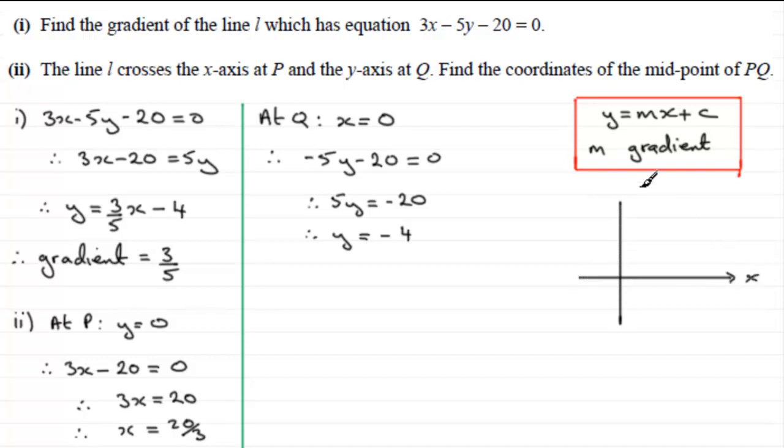So we've got our x-axis, we've got our y-axis, and we've got the point P. Its y-coordinate is 0 and the x-coordinate is 20/3, so we'll just say that P is here. P has coordinates 20/3 and comma 0. Whereas at Q, that's when x is 0, it intersects the y-axis at negative 4, so we'll just put Q down here at negative 4.